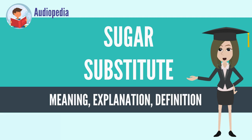In North America, the colors are typically blue for aspartame, pink for saccharin, yellow for sucralose in the U.S. and cyclamate in Canada, orange for monk fruit extract — a natural sweetener — and green for stevia, also natural.